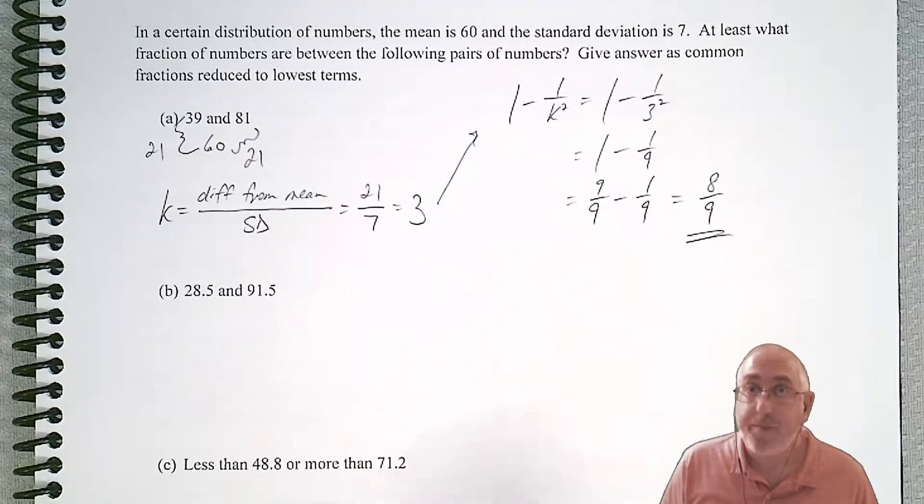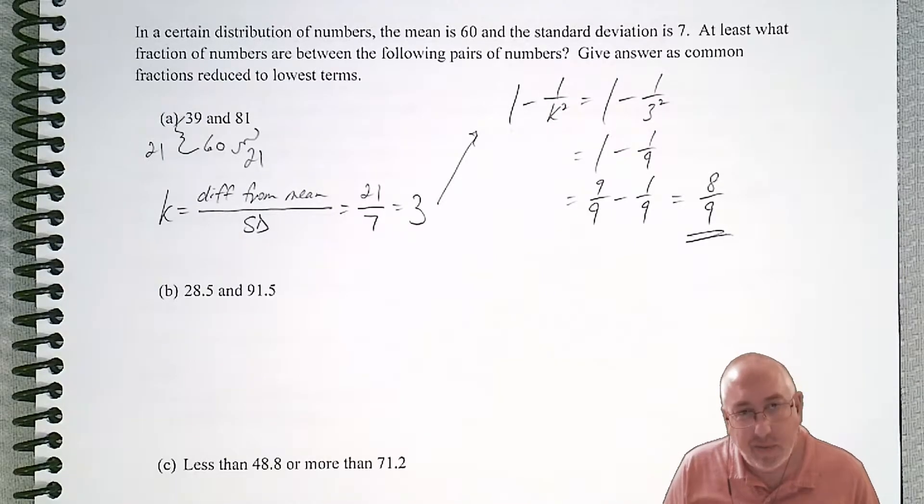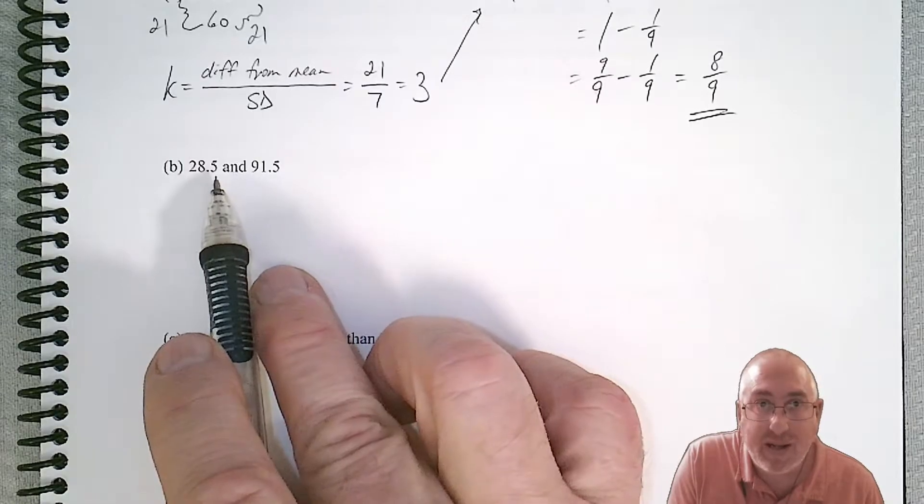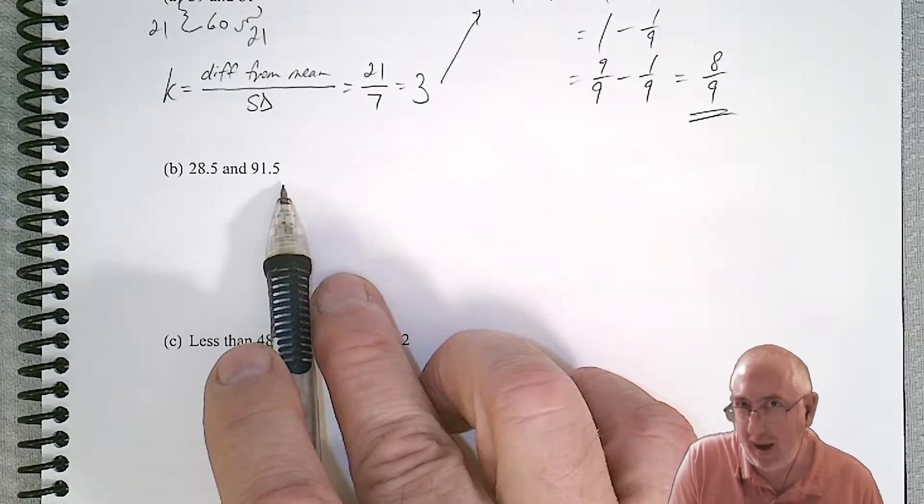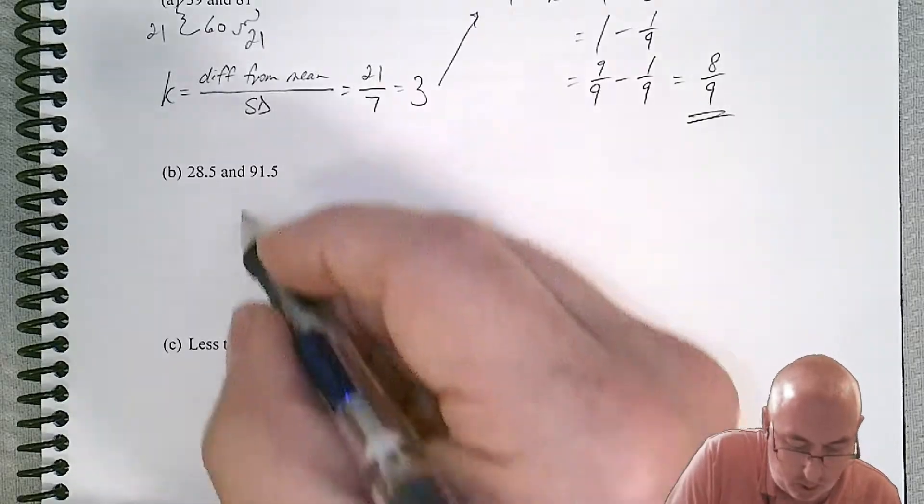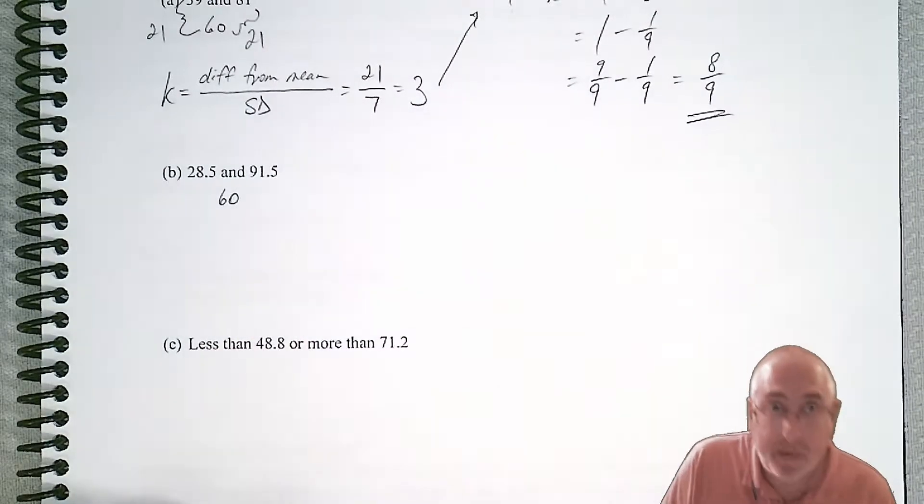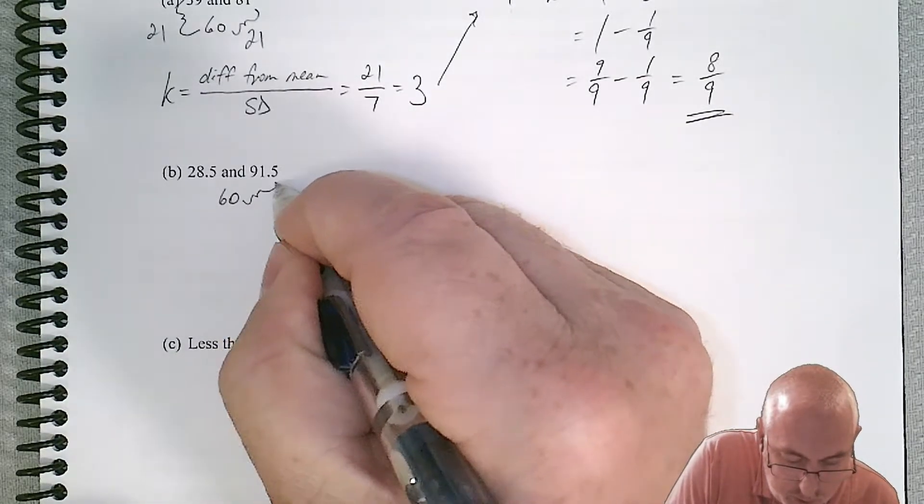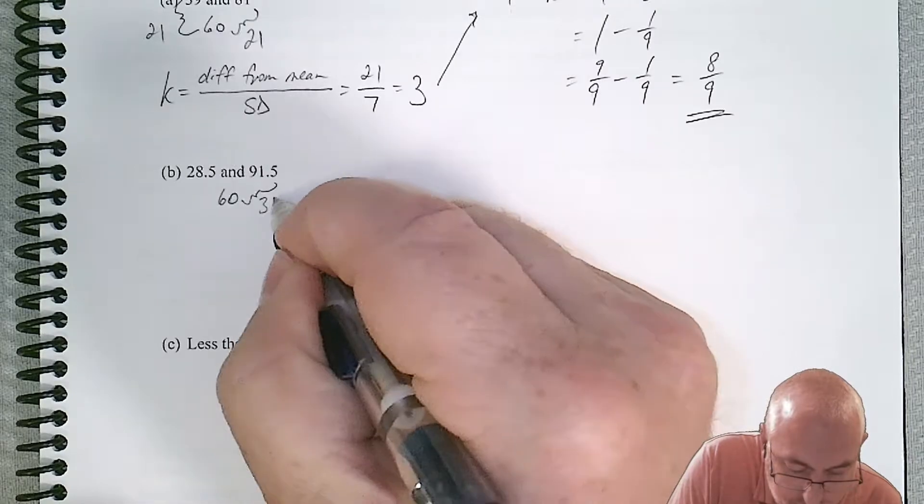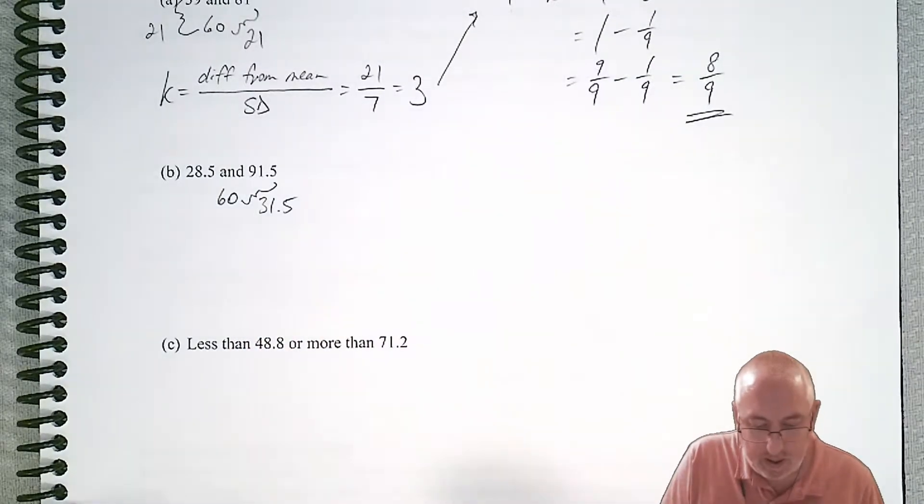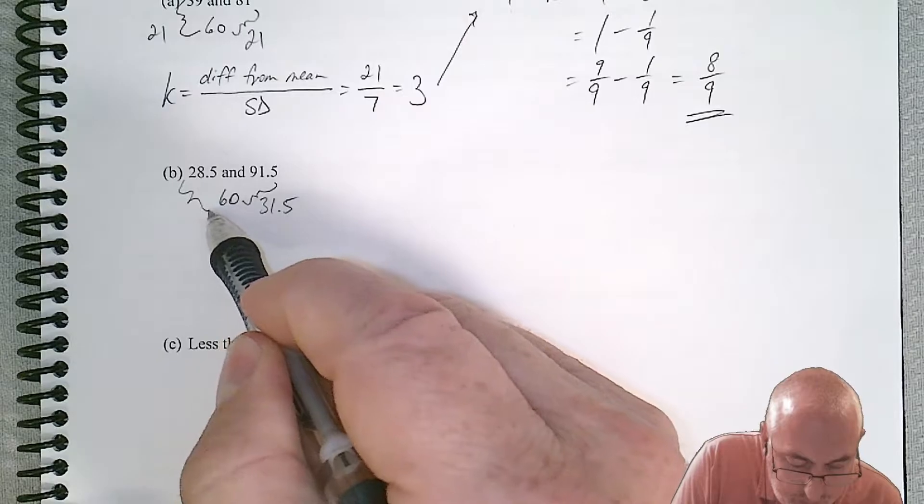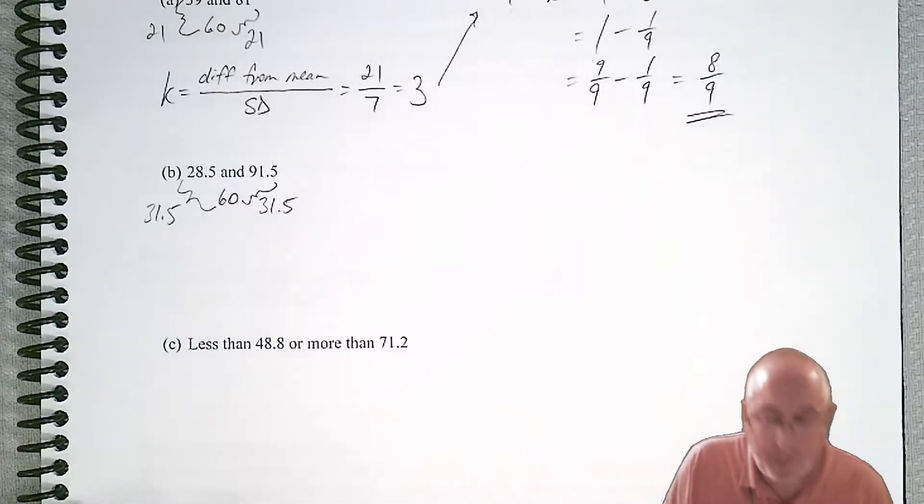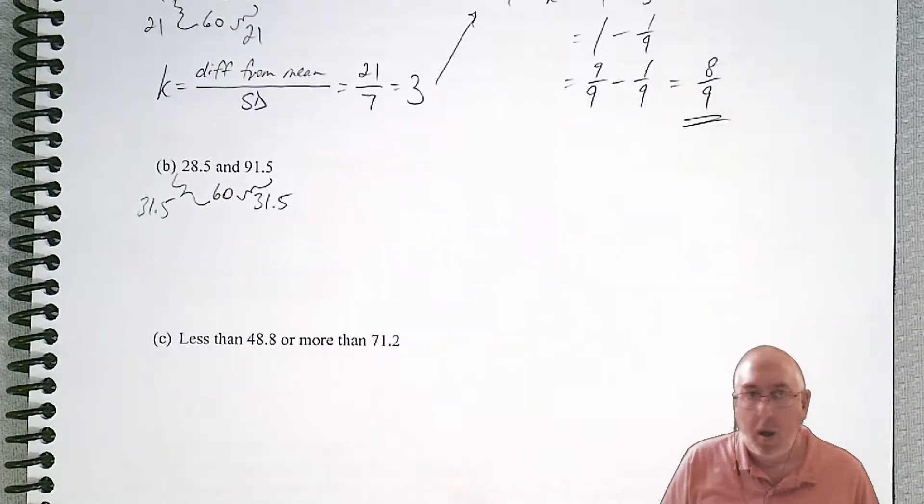Now, what about yuckier cases? Let's see what we got: 28.5 and 91.5. We still want to make sure that 60 is in the middle. So let's do our subtraction. On this side, we can see that we get 31.5. And if we subtract on this side, I'm pretty sure we get the same thing, 31.5.